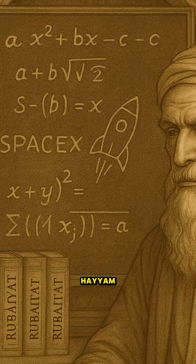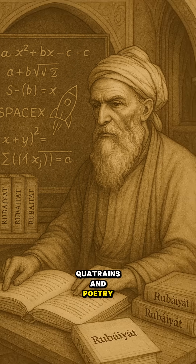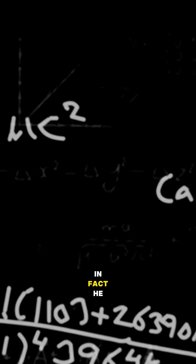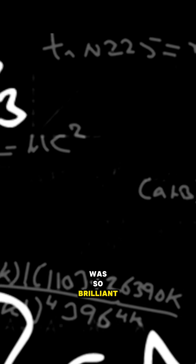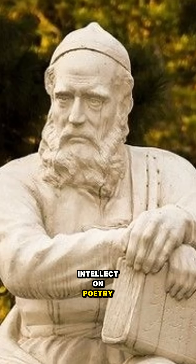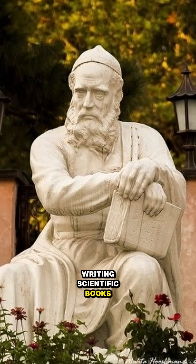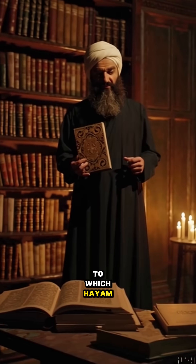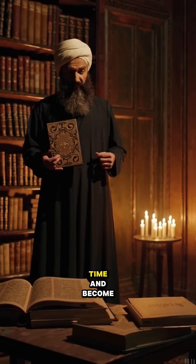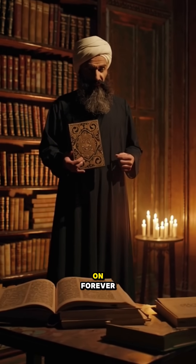You might have heard of Omar Khayyam, famous for his quatrains and poetry, but he was also a mathematical genius. In fact, he was so brilliant that a friend once told him, 'You're wasting your intellect on poetry — you should be writing scientific books.' To which Khayyam replied, 'Scientific books contradict each other over time and become outdated, but poetry lives on forever.'